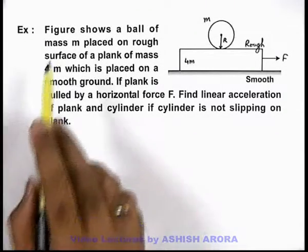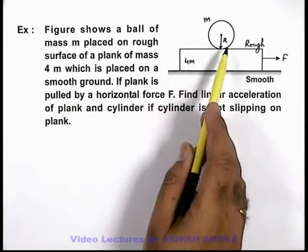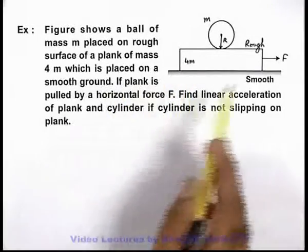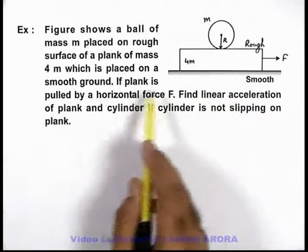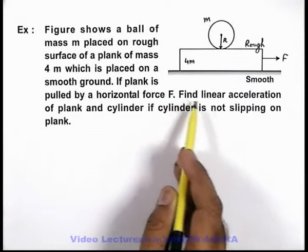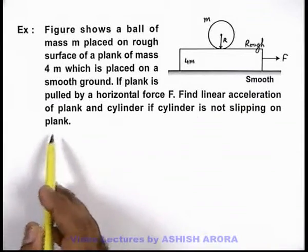In this example, the figure shows a ball of mass m placed on the rough surface of a plank of mass 4m, which is placed on smooth ground. If the plank is pulled by a horizontal force F, we're required to find linear acceleration of plank and cylinder if the cylinder is not slipping on the plank.